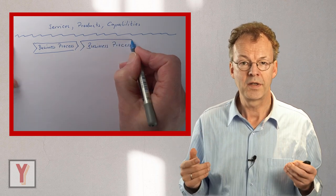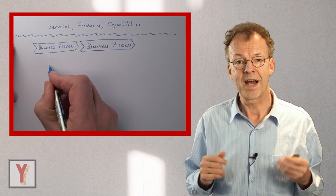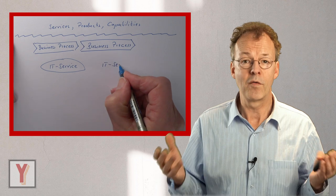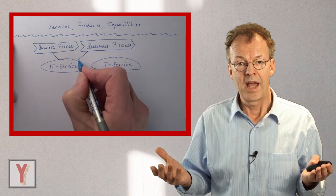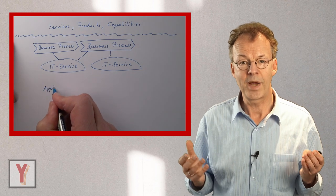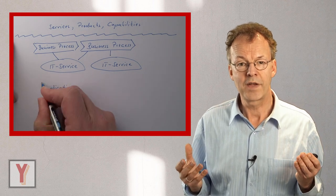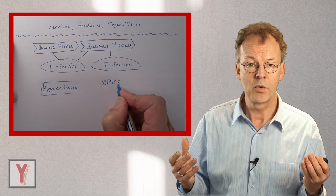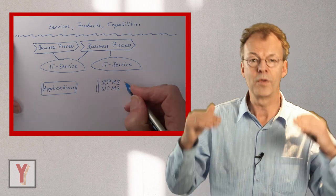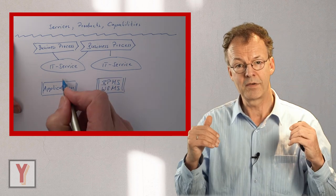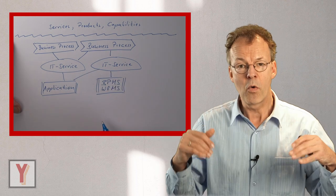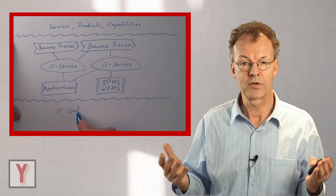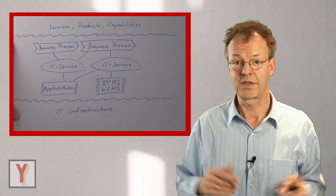The business processes in turn may be supported by IT services. And the IT services are made up of applications. And in the case of process aware information systems, we often have business process management systems or workflow management systems. So these workflow management systems are below the IT service level. And then again below these applications and workflow management systems, we have the IT infrastructure, consisting of hardware, networks, etc.